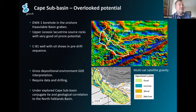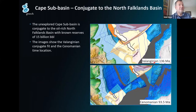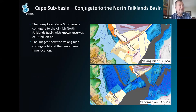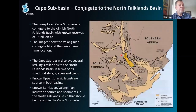Pre-continental drift, in Valanginian times, the North Falkland Basin has proven 15 billion barrels of oil — between Rockhopper oil and Falkland Oil and Gas. This is when drift continued, and there's a reconstruction of the Cape sub-basin and the North Falkland. Let's go and explore that.